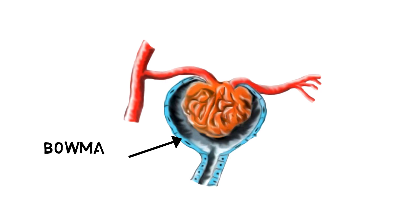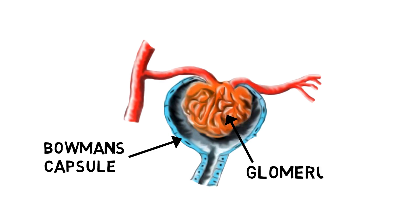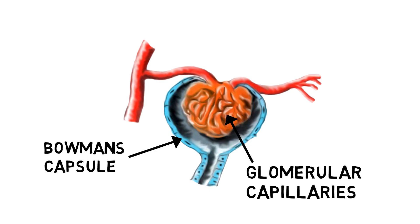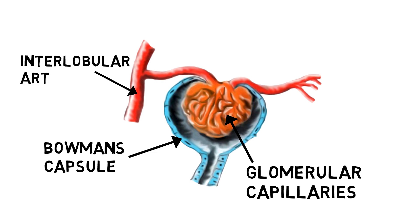As you can see, this is the Bowman's capsule, which is a double pouched structure that covers the glomerulus. These are the glomerular capillaries. This is the interlobular artery, which further branches to the afferent arteriole, entering the glomerulus and bringing blood.